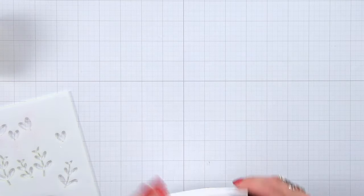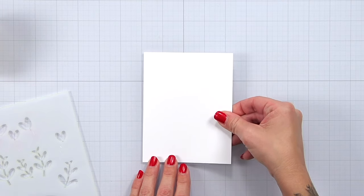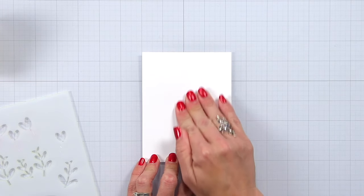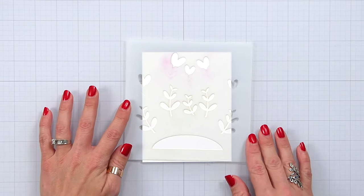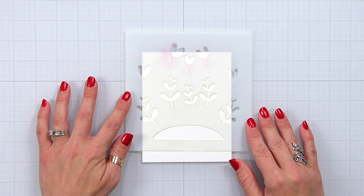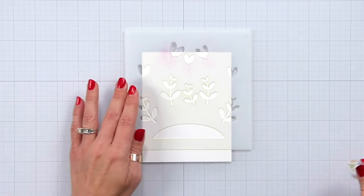The first thing that I'm going to do is create my background with that Heart Garden Stencil. I have some white card stock cut to four and a quarter by five and a half that I'm adhering down to my work surface with some post-it tape rolled up on the back.